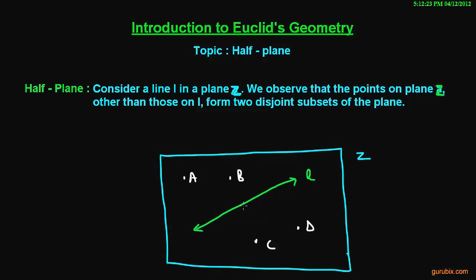So, each of these parts is called a half plane with edge in L. Thank you!